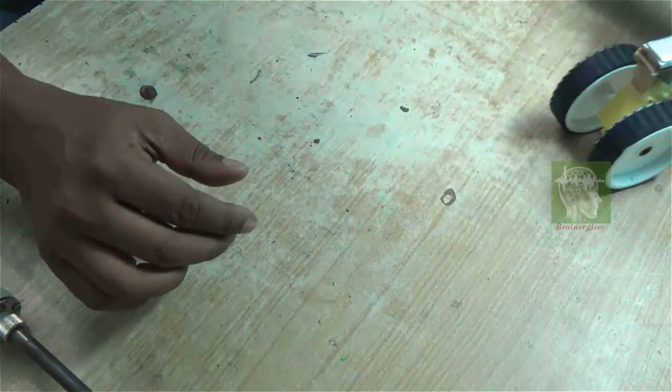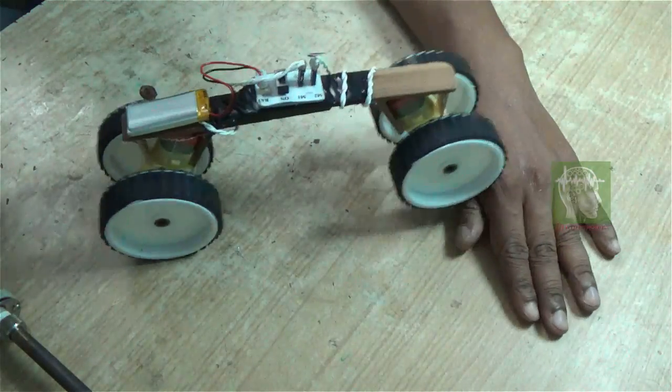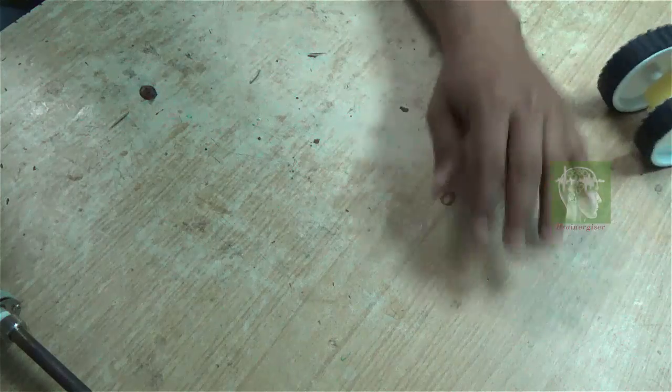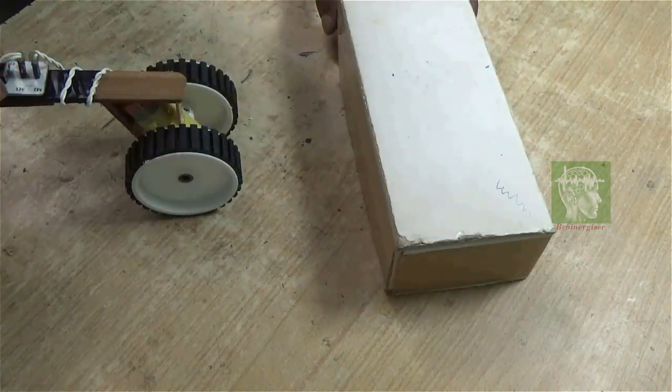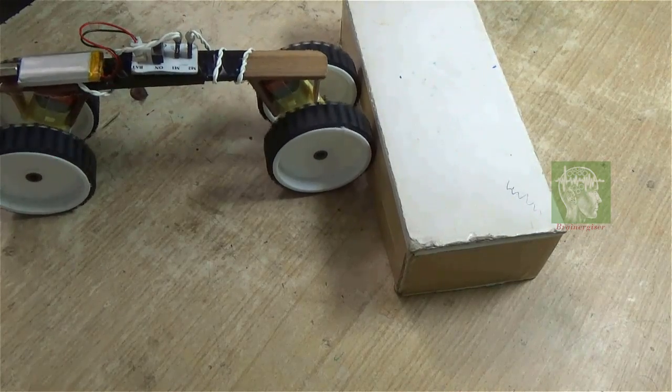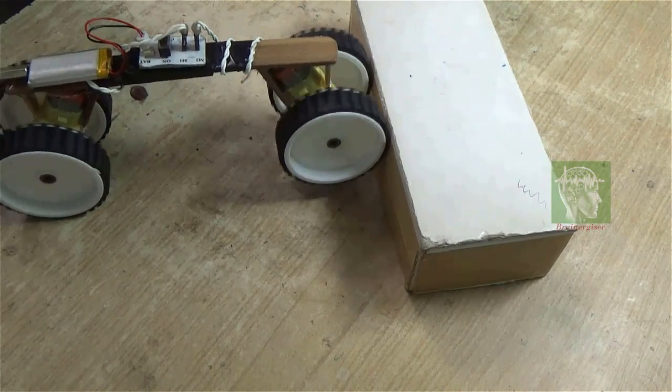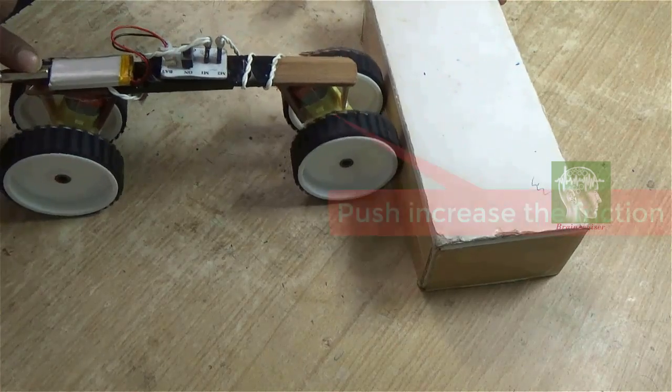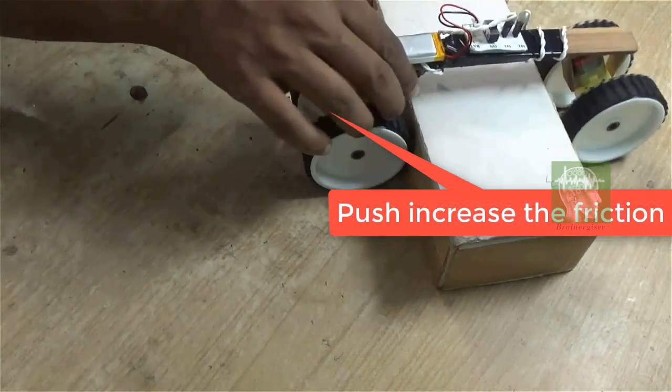See it's moving. Now if you keep something it will cross that easily. But how much it can cross? How far high? See it is not able to cross. Now if I apply some force downward, some push. See it's able to climb.